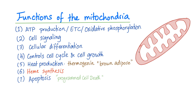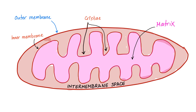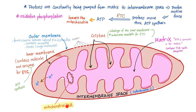Heme synthesis — make sure to watch that previous video. Structure of the mitochondria: outer membrane, inner membrane, with infoldings called cristae. Whatever is inside is called the matrix. Between the outer and inner membrane is the intermembrane space. Protons are constantly being pumped from the matrix to the intermembrane space, creating a proton motive force, which drives protons through ATP synthase, leading to synthesis of ATP via the electron transport chain.